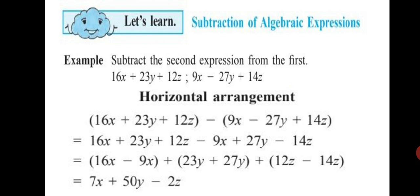Now we will group the like terms together as you did for addition. So 16x minus 9x comes in one bracket, plus 23y plus 27y in another bracket, plus 12z minus 14z in the last bracket, with addition signs in between them. Now we calculate: 16 minus 9 is 7, so 7x; 23 plus 27 is 50, so 50y; 14 minus 12 is 2 and the sign of the greater number is minus, so minus 2z. The last two steps you solve just like addition.